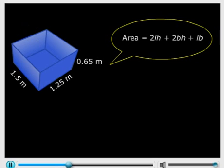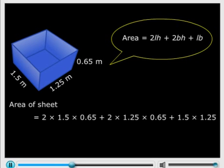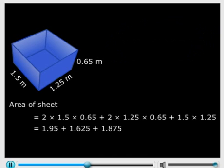Now just substitute the values. 2 into 1.5 into 0.65 plus 2 into 1.25 into 0.65 plus 1.5 into 1.25. And what do you get? 5.45 square meters.